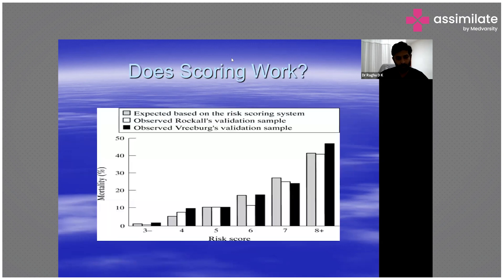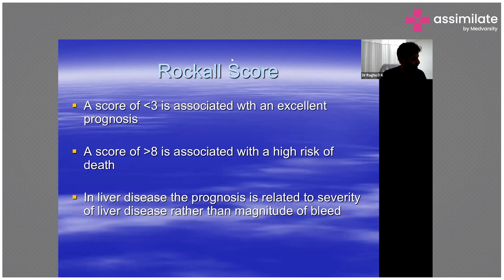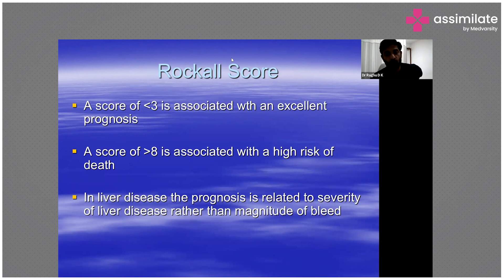A ROCAL score of less than three is associated with an excellent prognosis and much lower risk of re-bleeding. A score of greater than eight is associated with a higher risk of death and re-bleeding.